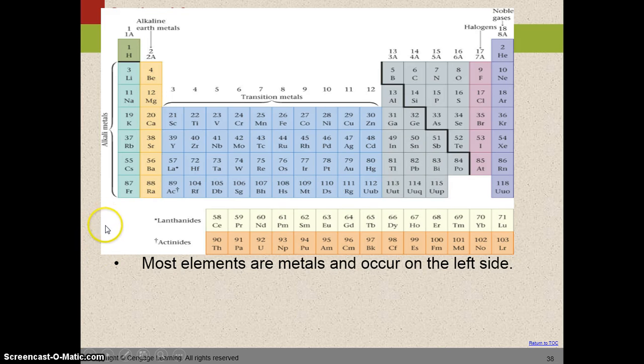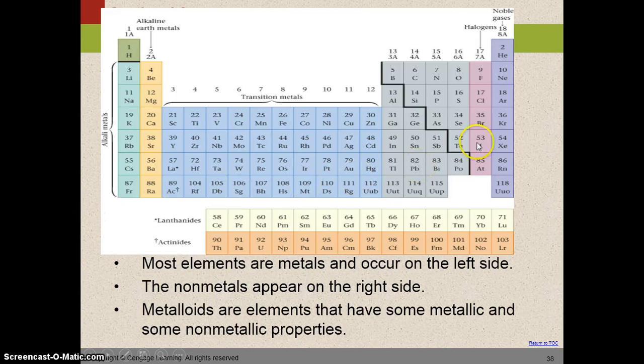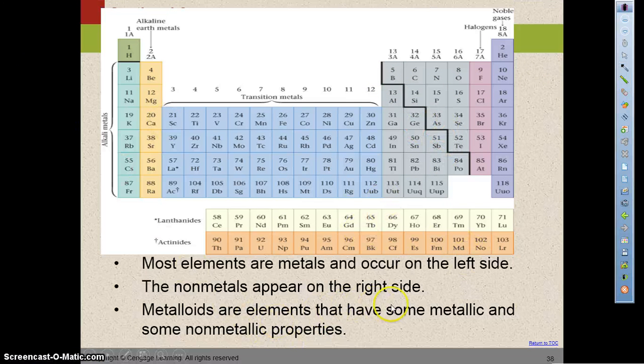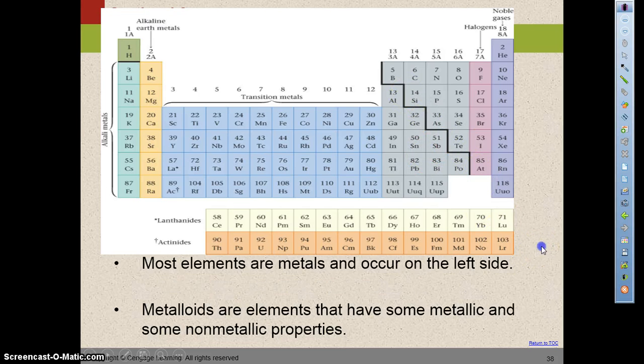Most of the elements are metals and they occur on the left. The non-metals are in the upper right-hand side. And the ones that are right here, that are on either side of the stair step, are referred to as metalloids. They have some metallic properties and some non-metallic properties. Because they're getting close to the non-metals but they're still on the metal side, or vice versa, they share metal and metalloid properties.